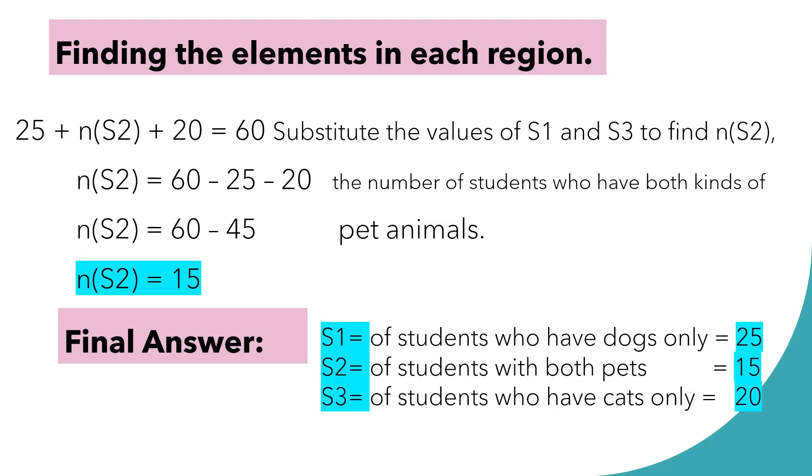So, we are done with the value of our set 1 and our set 3. So, for us to find N of set 2, we have 25. That is the value of our S1 plus N quantity S2 because that is unknown. Plus 20, that is the value of our S3 is equal to 60. That is the total number of students. So, that would be 25 plus 20 combined. So, that is 25 plus 20. That is 45. 60 minus 45. That is 15.